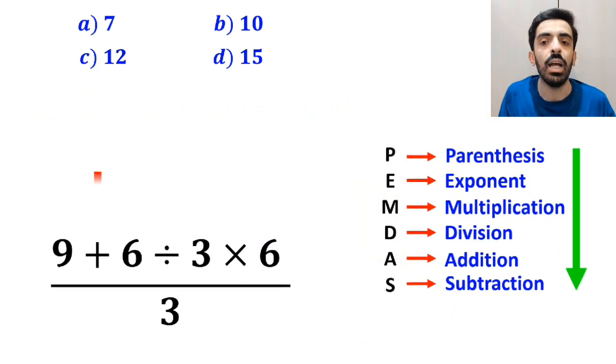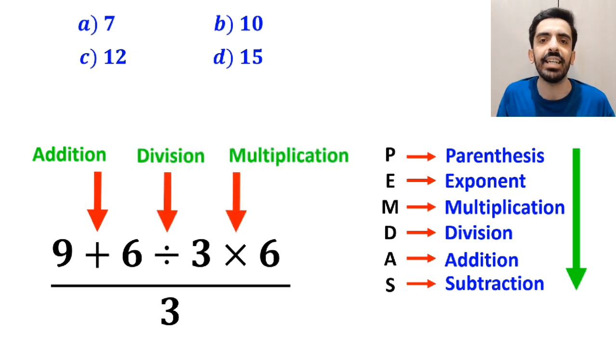in the numerator of this fraction, we have an addition sign, then a division sign, and finally a multiplication.